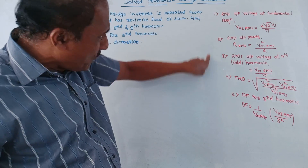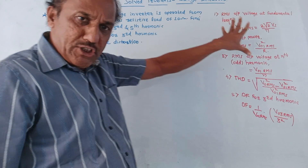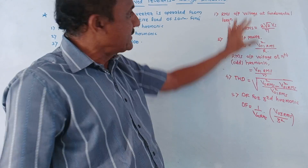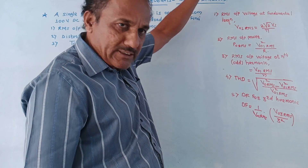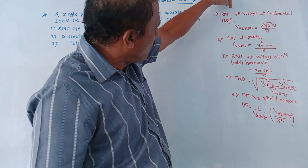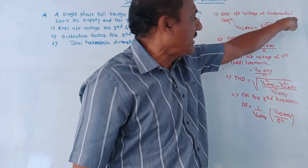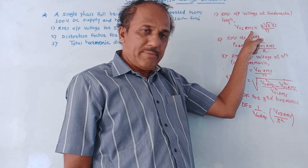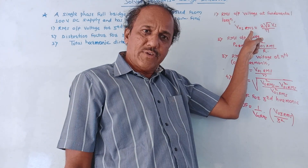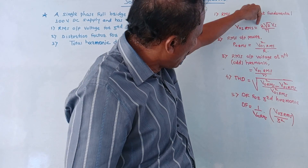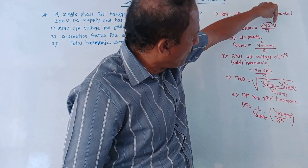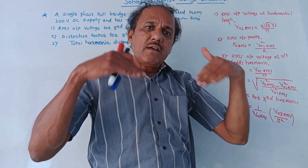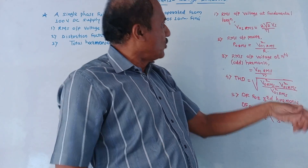This is the list of formulae. These formulae are sufficient to attempt the numericals related to bridge inverters. First formula is RMS, that is root mean square output voltage at fundamental frequency. Notation is V01RMS. Formula is V01RMS equals 2√2·Vs upon π, where Vs is the applied DC voltage.